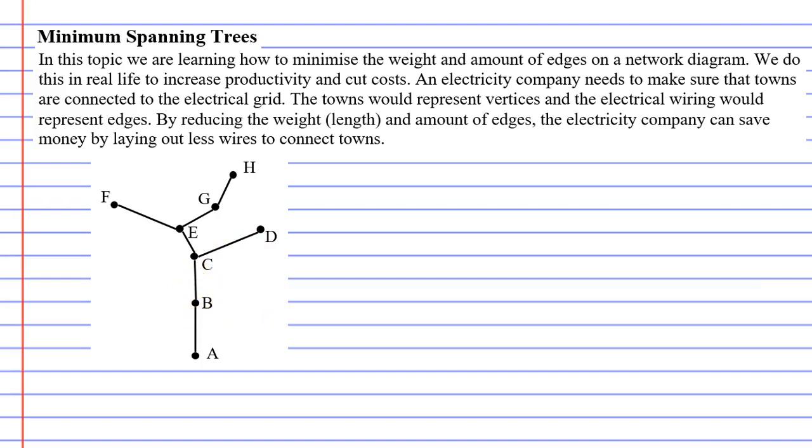Now the question is have they used the least amount of electrical wires? For example, if we look at town D, would that have been better connected to G instead of to C because it looks a bit shorter from D to G, maybe saving them costs and electrical wires.